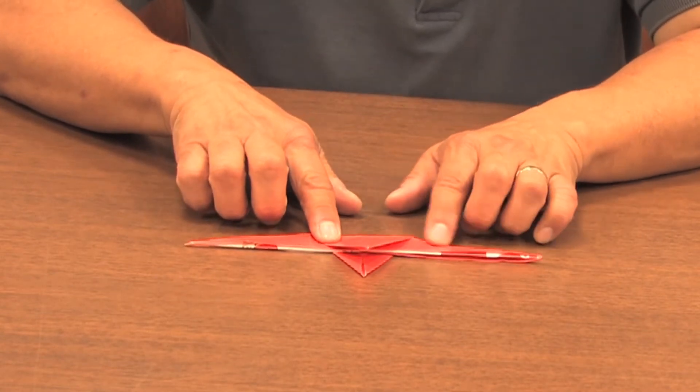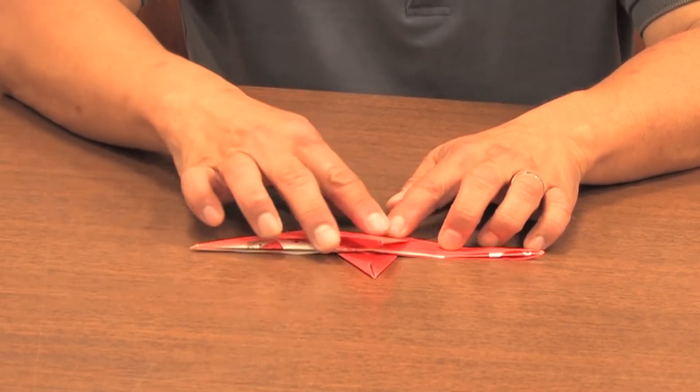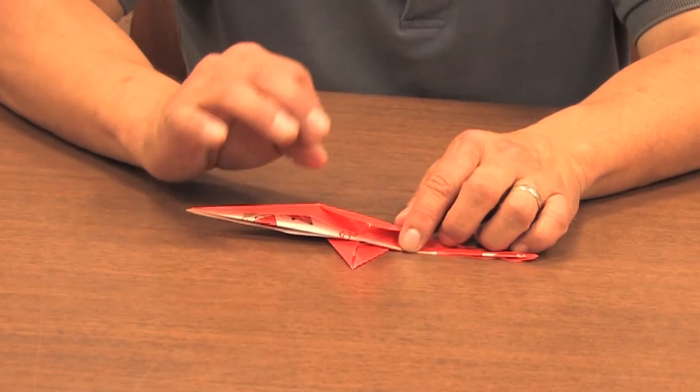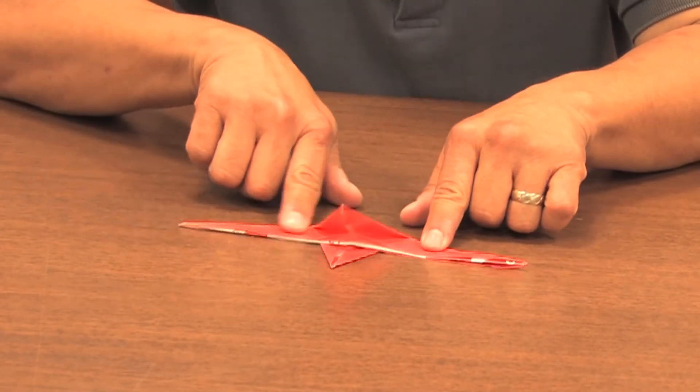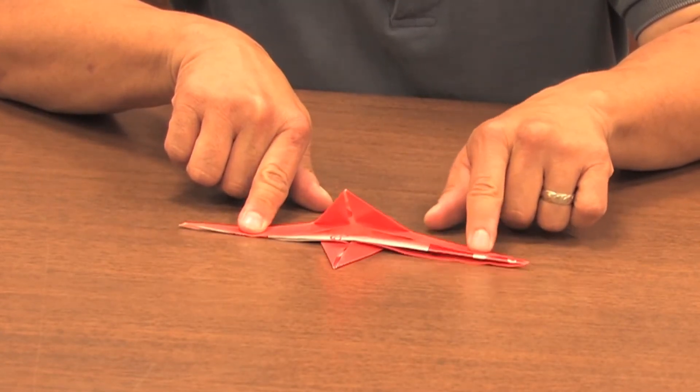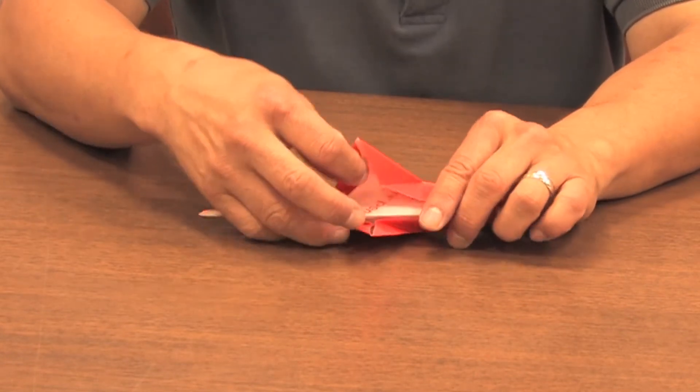So now we have to choose one to be the head and the other one to be...the giraffe is going to actually have three legs. So the part that comes to the point the nicest is this one. So we're going to use this for the head.